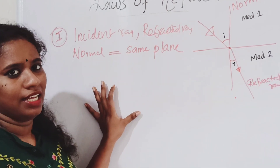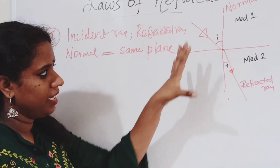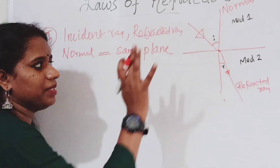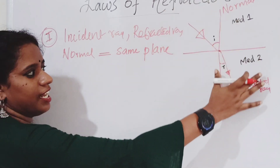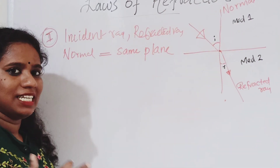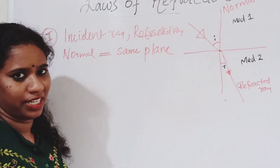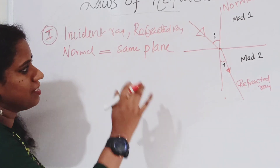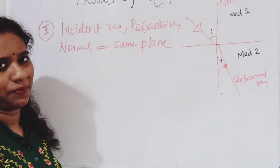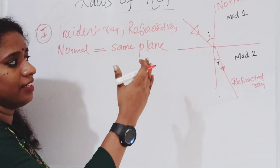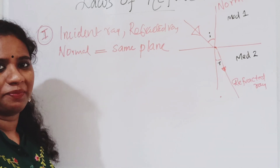That is the first law of refraction. All elements lie in the same plane — you need to take care of the same plane. The incident ray, refracted ray, and the normal to the surface of separation at the point of incidence all lie in the same plane.